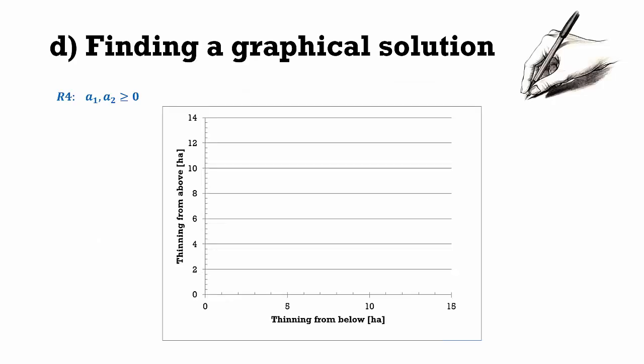We only have to deal with two decision variables in this example — the area for management type 1 and the area for management type 2 — so we can use a two-dimensional coordinate system to find a graphical solution. We display thinning from below on the x-axis and thinning from above on the y-axis. Since one of our restrictions is non-negativity, the coordinate system covers the positive solution space only.